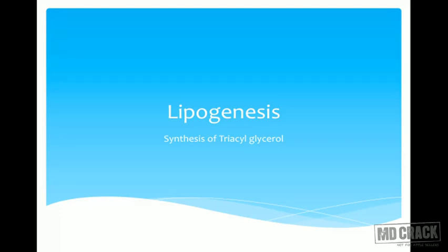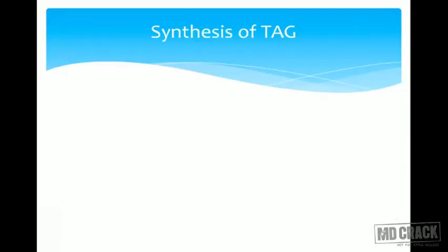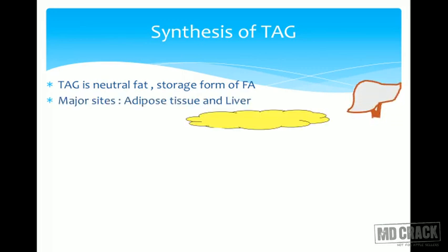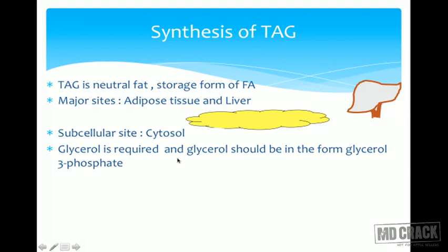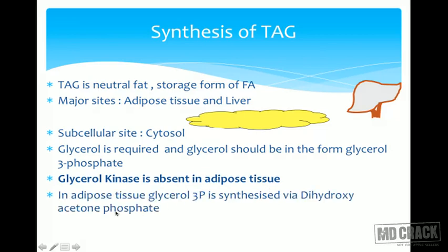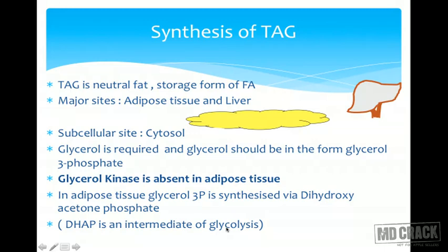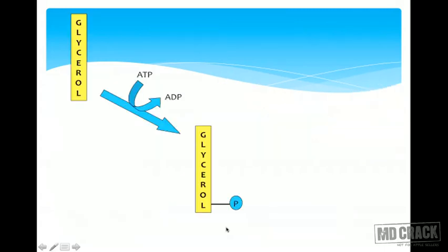Now we go on to lipogenesis — the synthesis of triacylglycerol. TAG is the neutral fat and storage form of fatty acids, stored in adipose tissue. TAG synthesis also takes place in the liver, but the liver does not store it — it transports it out via VLDL formation. The subcellular site is the cytosol. Glycerol is required in the form of glycerol-3-phosphate. Glycerol kinase is absent in adipose tissue, so glycerol-3-phosphate is synthesized from dihydroxyacetone phosphate (DHAP), an intermediate of glycolysis.